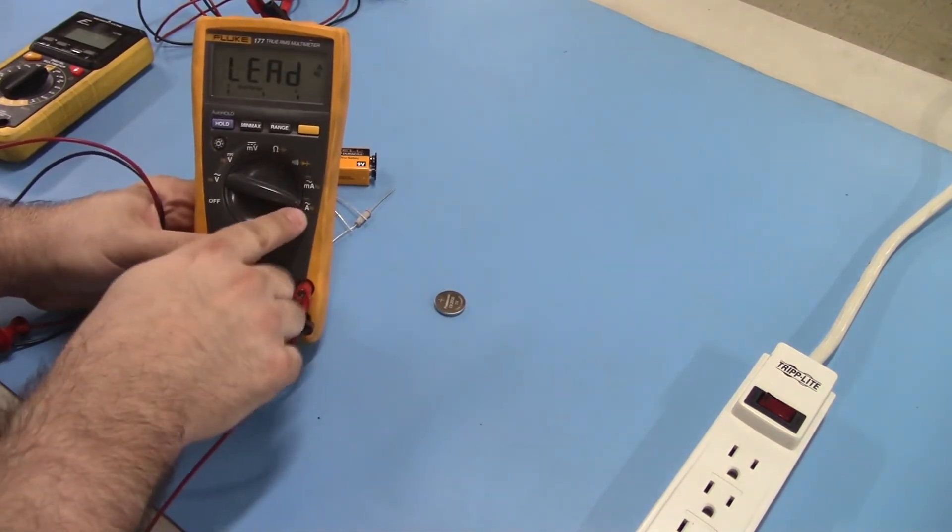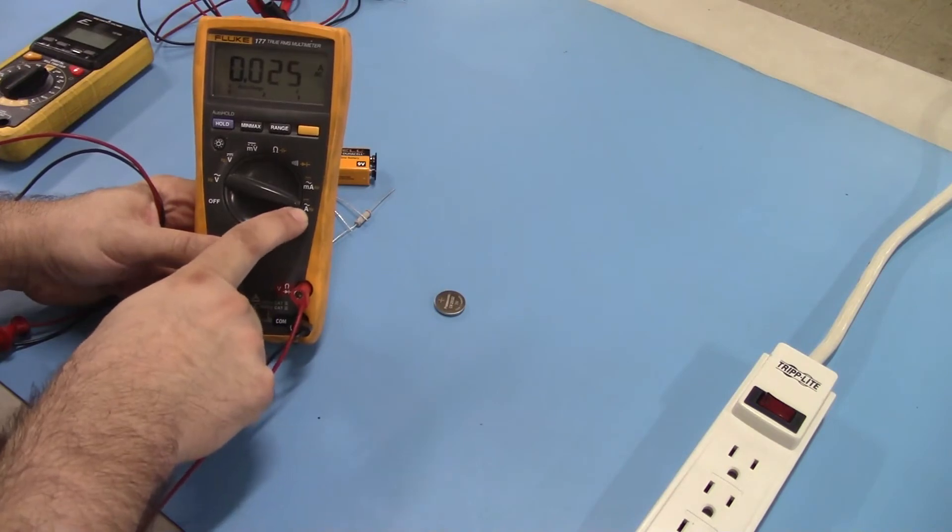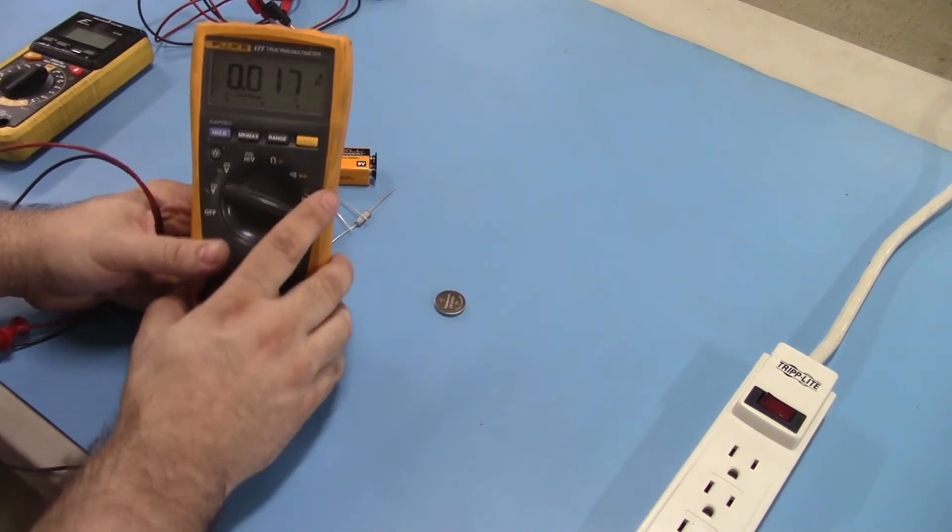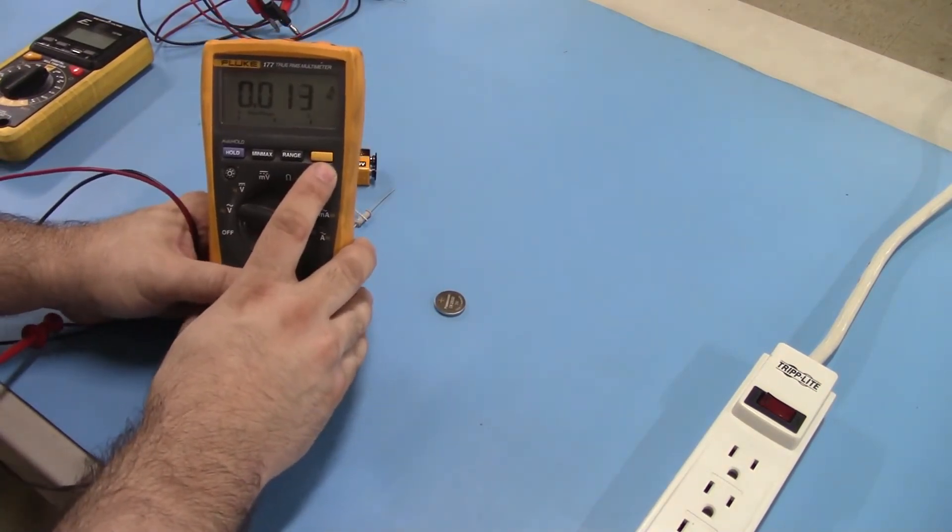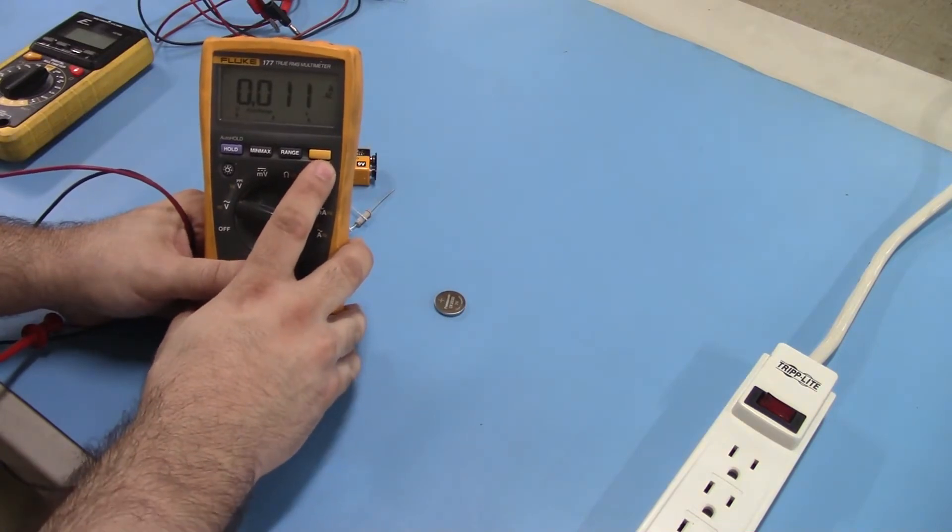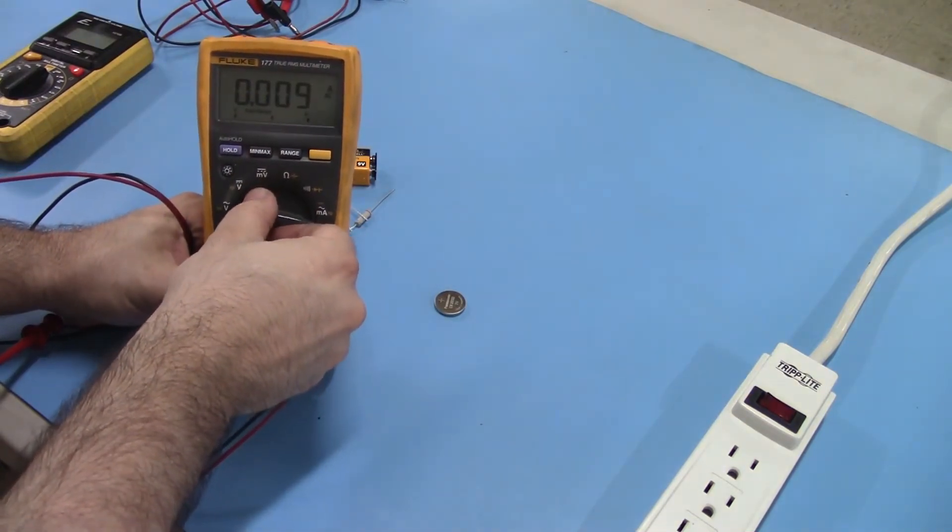And of course the last selector was amps there, AC amps there. Now on this meter there is a yellow button here that's basically your shift key. It will shift you to different modes.